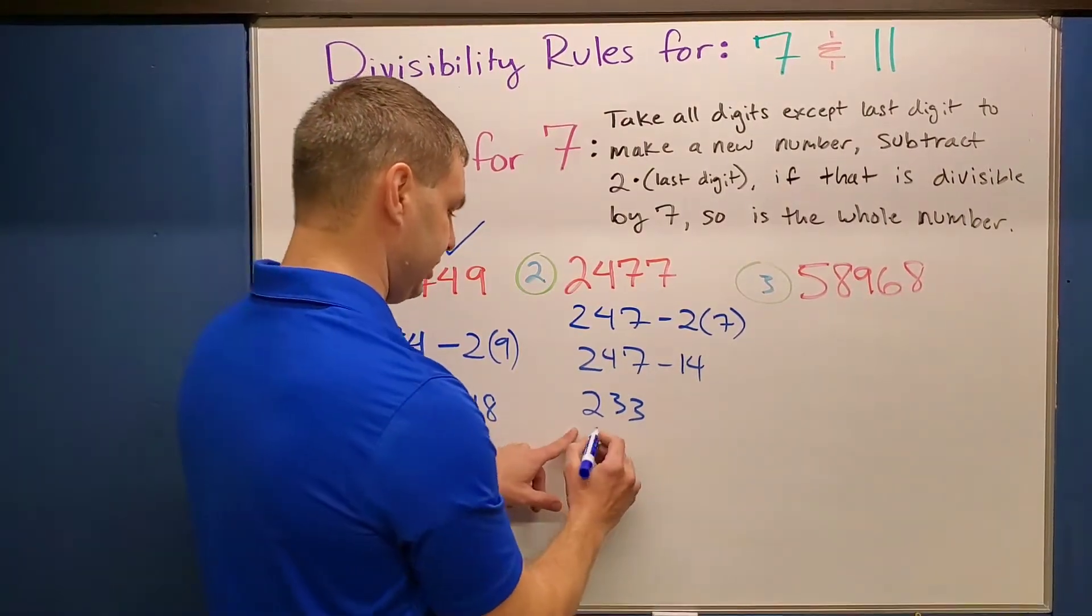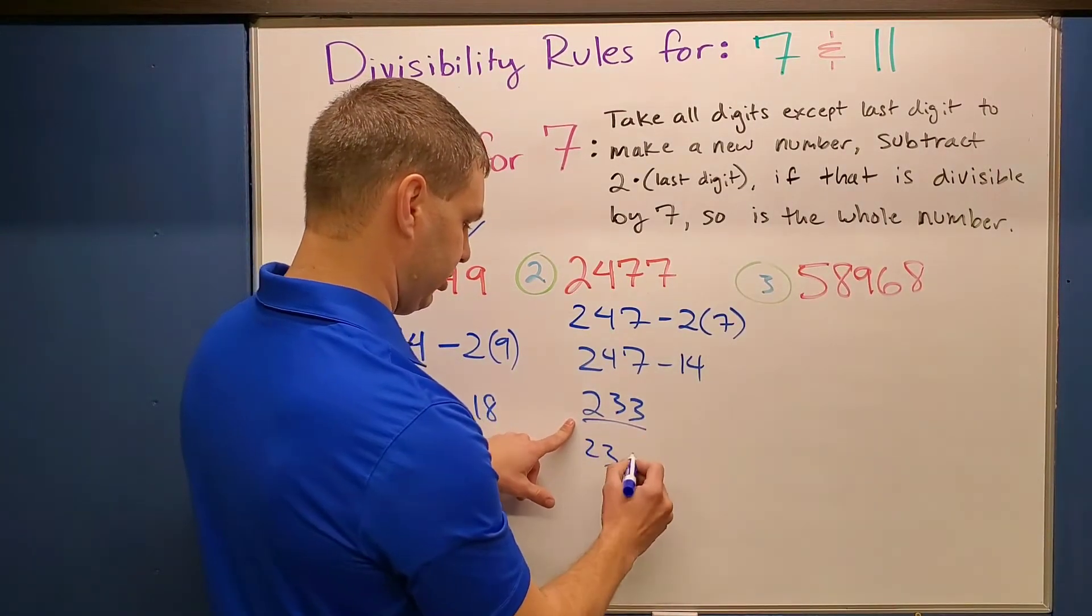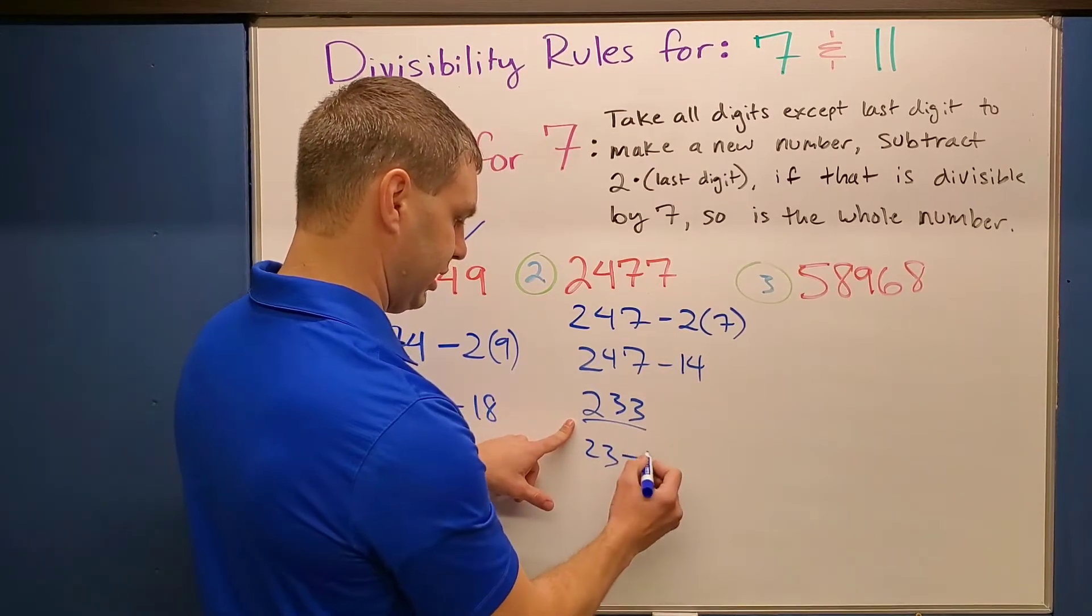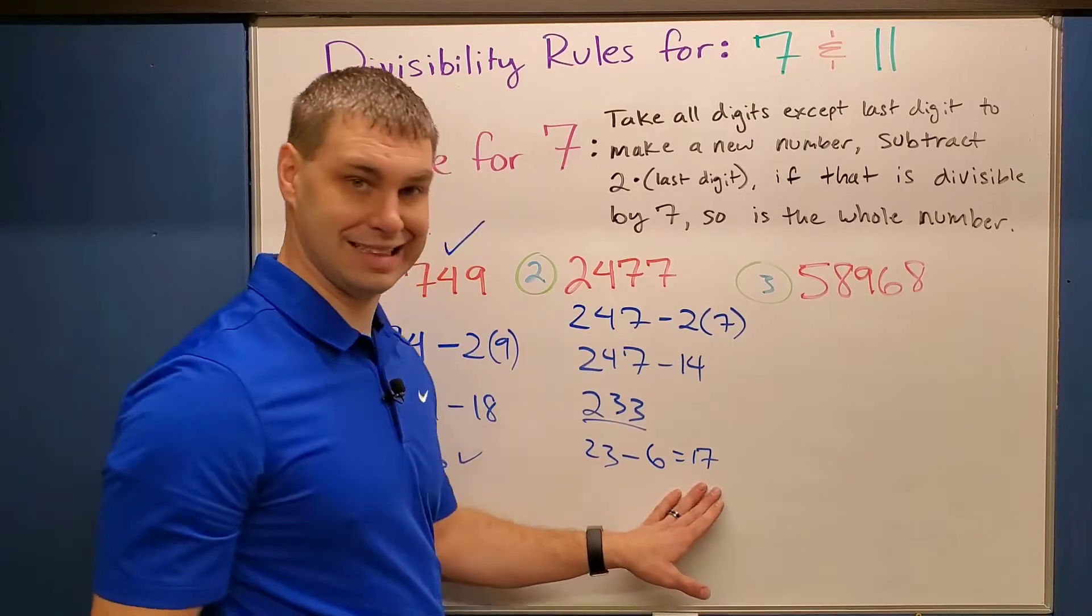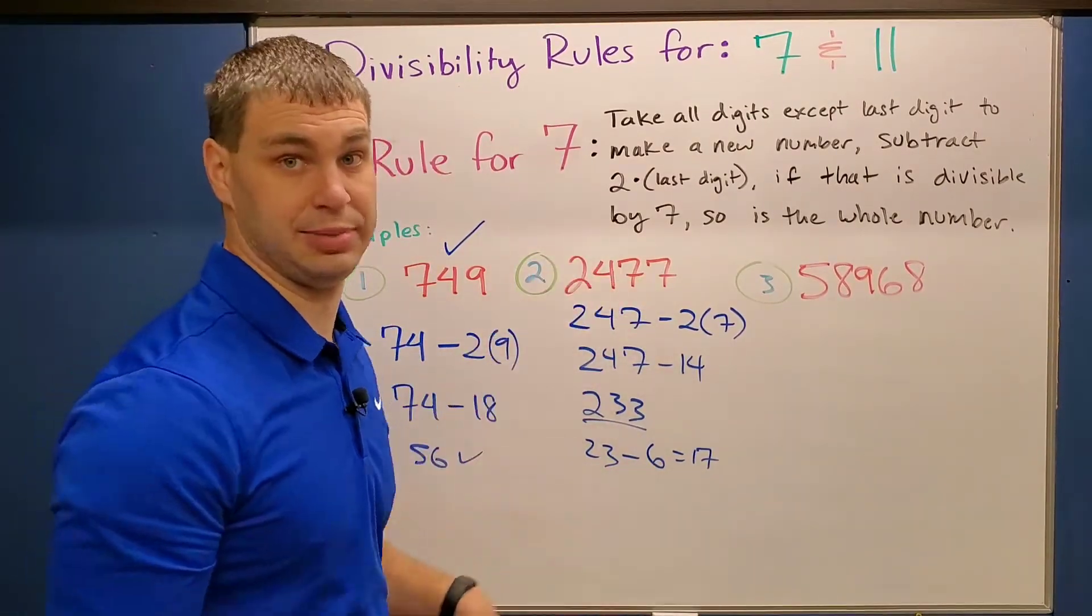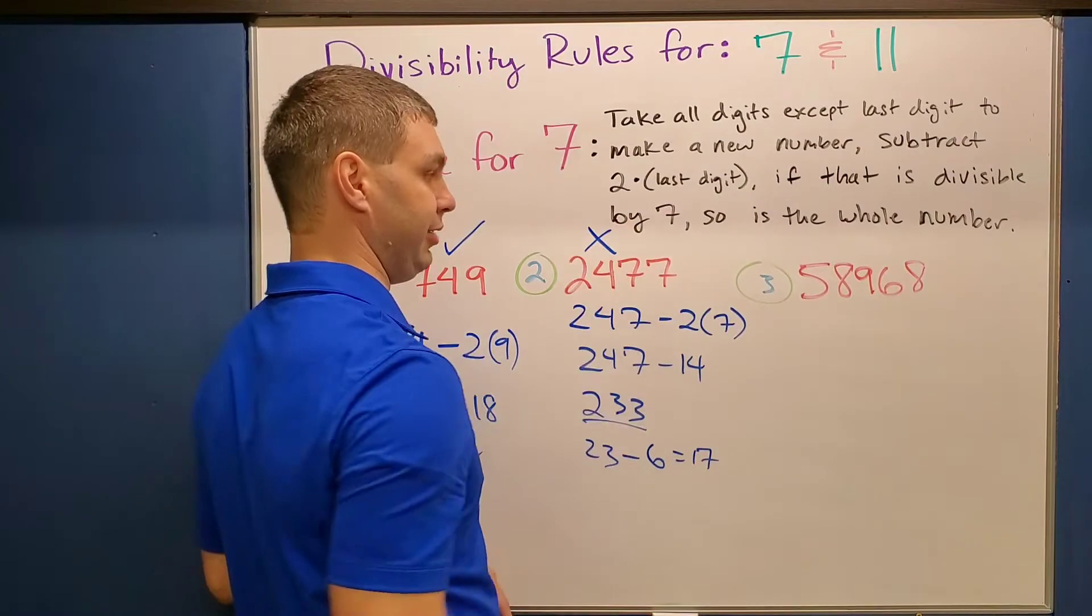So in this case, I'm going to take 23 now and subtract 2 times my last digit. Well, that would be subtracting 6, which is 17. And I know 17 is not divisible by 7, so the whole thing will not be divisible by 7. That one does not work.